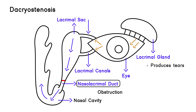So to summarize: the lacrimal glands produce tears. The tears go from the eye surface to the lacrimal sac, then to the nasolacrimal duct, and into the nasal cavity. That's why a person's nose starts to run when they're crying a lot — because that's where the tears are going.